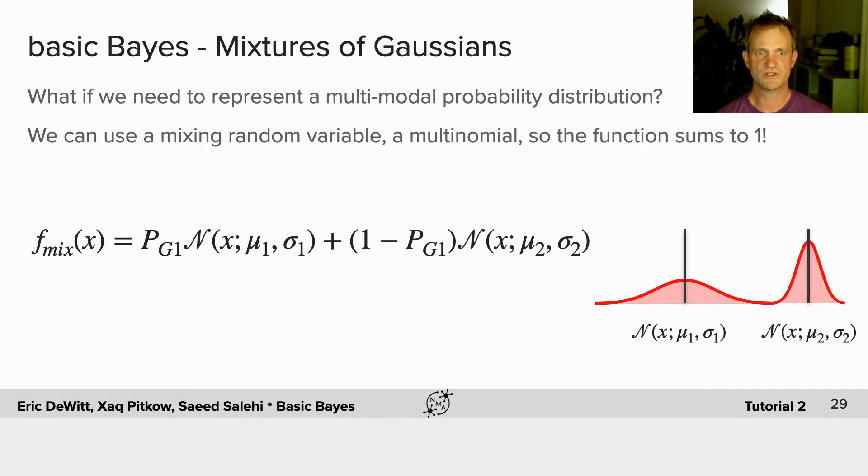Here, what we can do is we can use a mixing random variable, a multinomial, so that the function sums to one. That is, the probability of being in Gaussian one times that Gaussian plus one minus the probability of being in Gaussian one times Gaussian two.